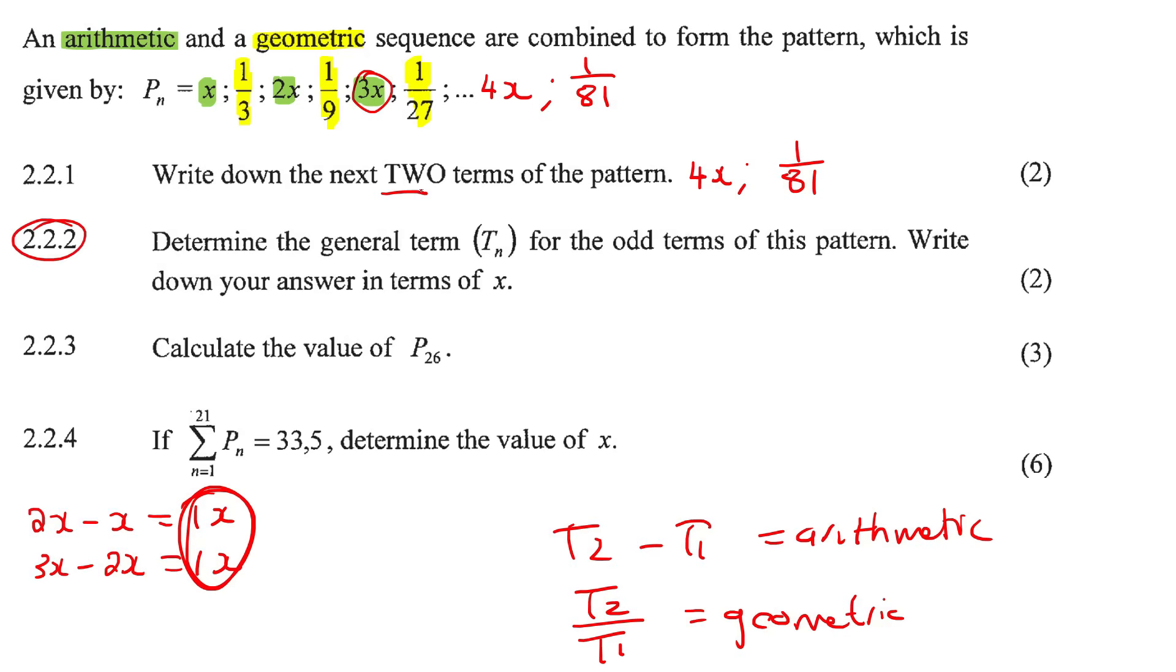This question says, determine the general term tn for the odd terms. Now I've had questions about this in the past. They were getting very confused with odd terms. They were looking for all the odd numbers. But no, they said the odd terms. So remember, this is term one, this is term two, this is term three, this is term four, that's term five. So the odd ones, they're not talking about odd over here. They're talking about odd over here, the odd terms. So that would be term one, term three, term five.